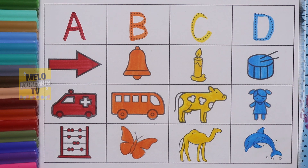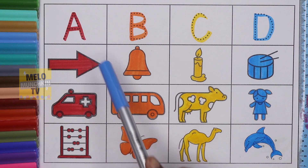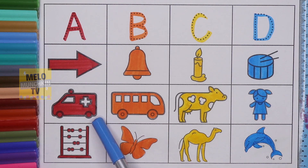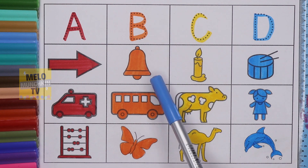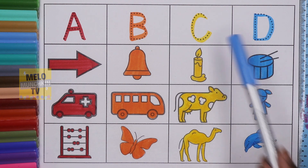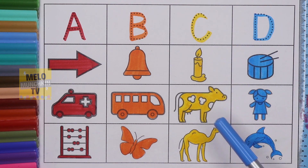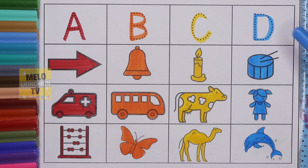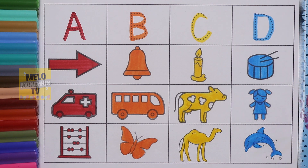So let's repeat once again. A — A for arrow, A for ambulance, A for abacus. B — B for bell, B for bus, B for butterfly. C — C for candle, C for cow, C for camel. D — D for drum, D for doll, D for dolphin. So hence we have completed our alphabets from A to D along with the objects starting with the letters A, B, C and D.